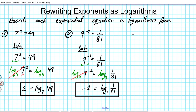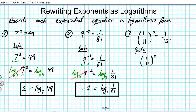Moving along to number 3: (1/11) squared equals 1 over 121. This is the example shown in the opening of the presentation. We have a fractional base here — 1 over 11 — and that will be the base of our logarithm.